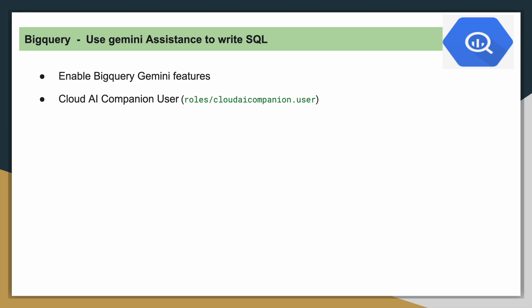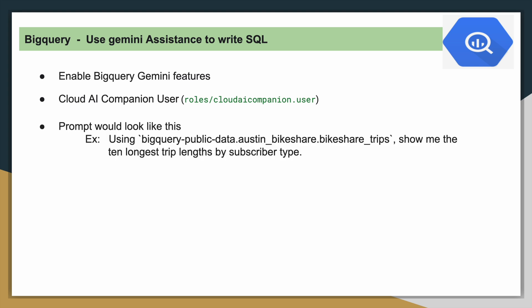The second prerequisite is about permissions. The basic role needed to use Gemini assistance to write SQL is the Cloud AI Companion User role. This role has to be granted to a particular user to make use of Gemini assistance to write SQL.